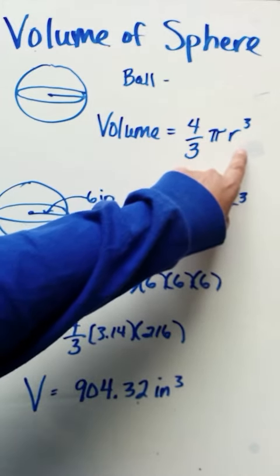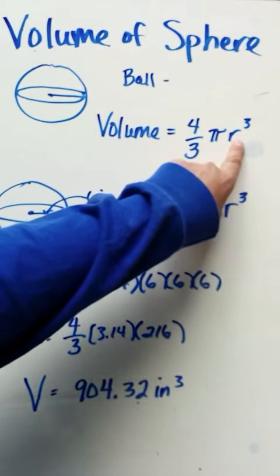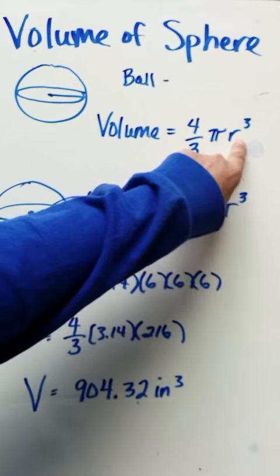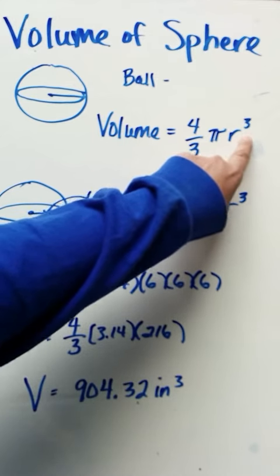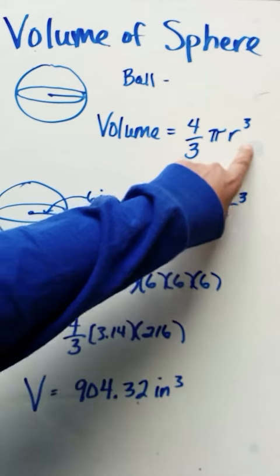And what this means is you need the radius, multiply the radius three times. That's what radius cubed means. It means radius times radius times radius.